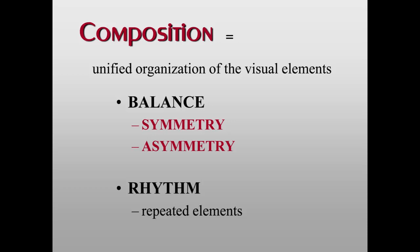Generally we think the composition should be balanced in some way, and there are two different types of balance: symmetry and asymmetry. Another way of organizing is to repeat different elements — a repeated line, a repeated shape, a repeated color. When you repeat something, we say it sets up a rhythm, just like in music. You can do this visually as well.